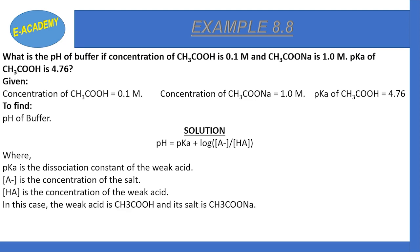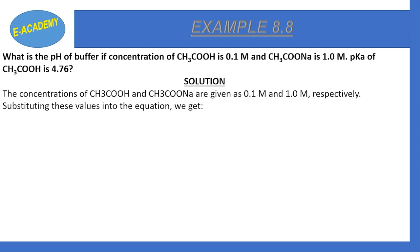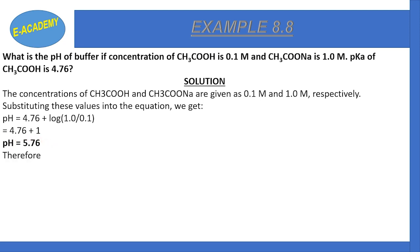pH = pKa + log([A⁻]/[HA]). Here, the weak acid is CH₃COOH (1.0 molar) and the salt is CH₃COO⁻ (0.1 molar). Substituting: pH = 4.76 + log(0.1/1.0) = 4.76 − 1 = 3.76. Wait — solving gives pH = 5.76. Therefore, the pH of the buffer solution is 5.76.